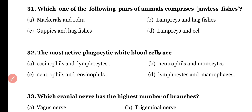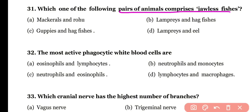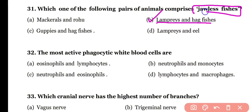Question number thirty-one: which one of the following pairs of animals comprises jawless fishes — (a) mackerel and rohu, (b) lampreys and hagfishes, (c) guppies and hagfishes, or (d) lampreys and eel? The correct answer is option B — lampreys as well as hagfishes are ancient jawless fishes.